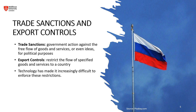Trade sanctions are government actions against the free flow of goods, services, or even ideas for political purposes. An example of trade sanctions could be the sanctions imposed by the United States and the European Union on Russia following its annexation of Crimea in 2014. These sanctions included asset freezes and travel bans on individuals and companies, restrictions on trade, and restrictions on access to financial markets and services, aiming to pressure Russia politically to deter further aggressive actions.